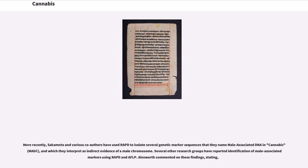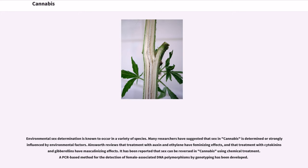More recently, Sakamoto and various co-authors have used RAPD to isolate several genetic marker sequences that they name male-associated DNA in cannabis (MADC), which they interpret as indirect evidence of a male chromosome. Several other research groups have reported identification of male-associated markers using RAPD and AFLP. Ainsworth commented on these findings, stating that environmental sex determination is known to occur in a variety of species. Many researchers have suggested that sex in cannabis is determined or strongly influenced by environmental factors. Treatment with auxin and ethylene have feminizing effects, and treatment with cytokinin and gibberellins have masculinizing effects. It has been reported that sex can be reversed in cannabis using chemical treatment. A PCR-based method for the detection of female-associated DNA polymorphisms by genotyping has been developed.